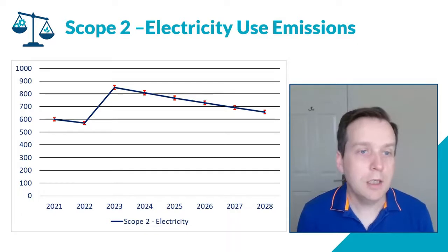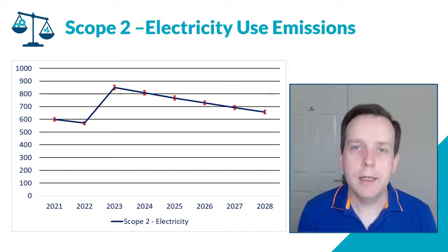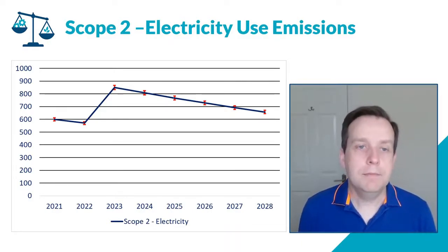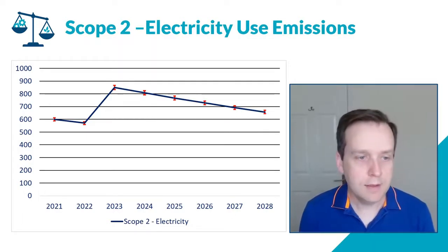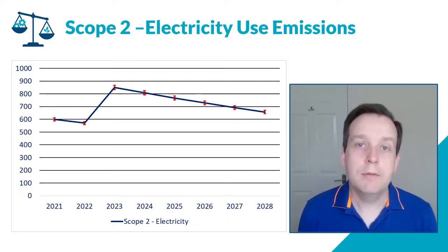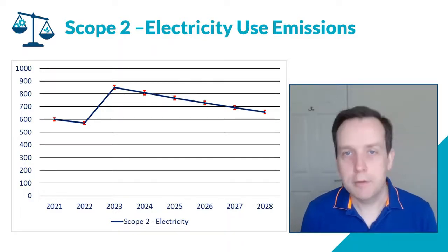You will never remove electricity use entirely — what you want is to remove carbon. Other options include green electricity contracts, whereby you're specifically paying for renewable energy to offset the carbon footprint for scope two. But even if you are buying green, you do still have to report the emissions as per UK government conversion factors. For example, in 2022 this company has about 600 tonnes of CO2 associated with electricity — you can note it's offset by a green energy contract, but you cannot report zero.